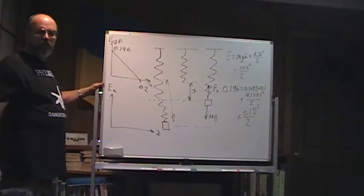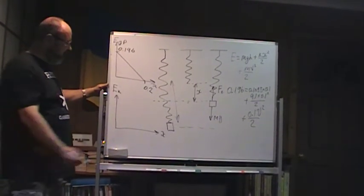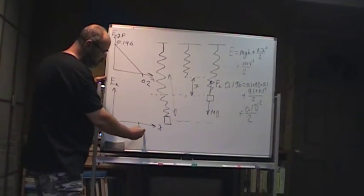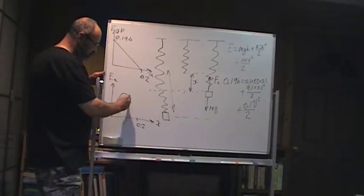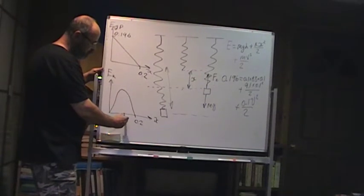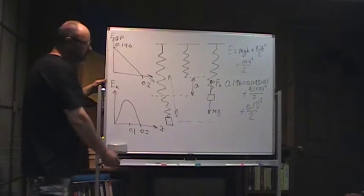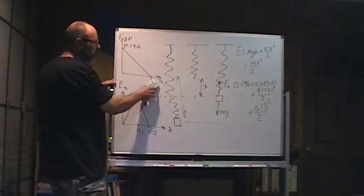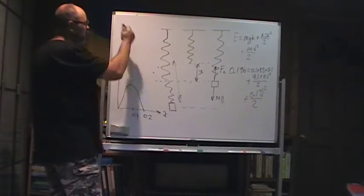At 0.2 it has to be 0 again. So graph of the kinetic energy. It looks like this with a maximum at 0.1. And the elastic potential energy, strain potential energy.